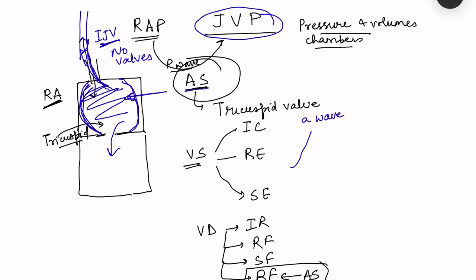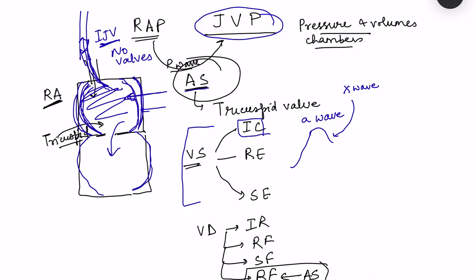Just after atrial systole, the atria start relaxing again, so there will be a descent in pressure — that is known as the X wave. But as the atria start relaxing, ventricular systole begins. The first phase is isovolumetric contraction — blood is not moving out but the ventricles are contracting, pressure builds inside the right ventricle, causing little bulging of the tricuspid valve into the atria. This produces a small rise in pressure in the JVP form, known as the C wave — the descent in pressure is interrupted by this little rise.